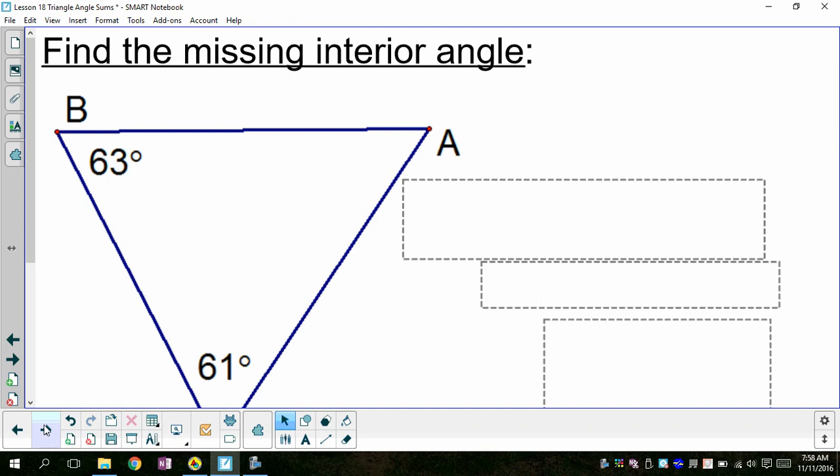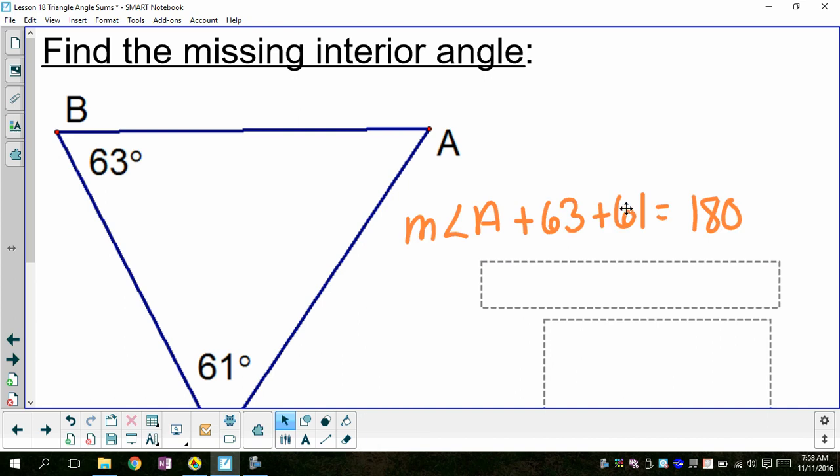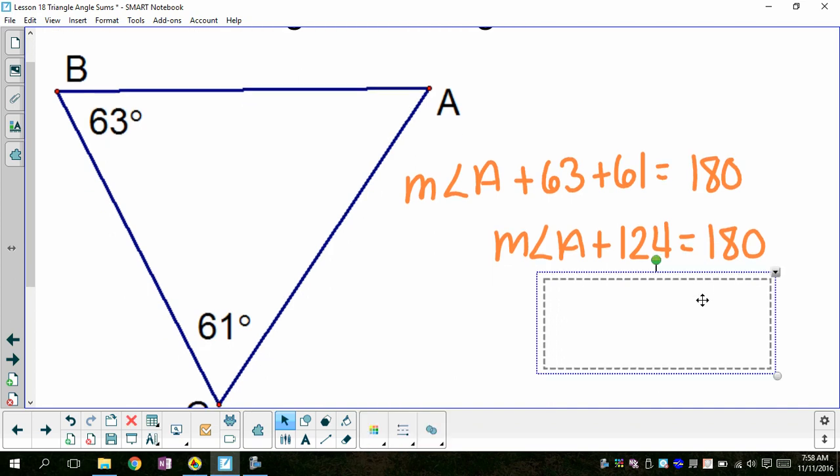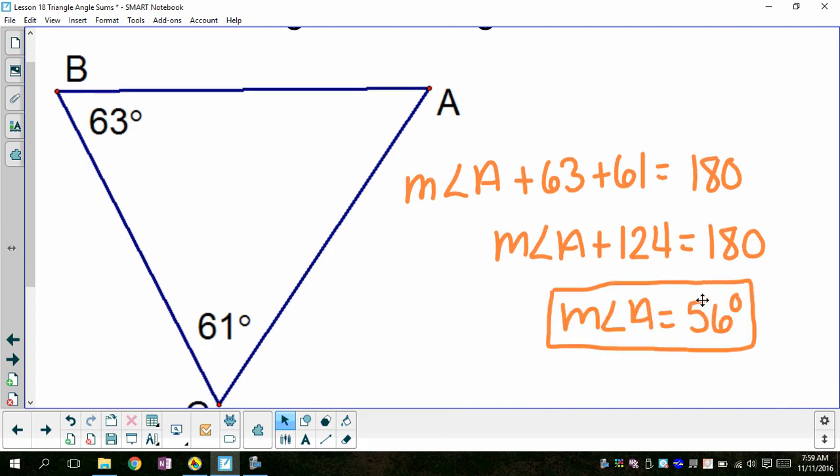So go ahead and pause now and find angle A. So again, I can just add angle A to the two that I know, 63 and 61. They should add up to 180. Finish by solving and get that this missing angle is 56 degrees.